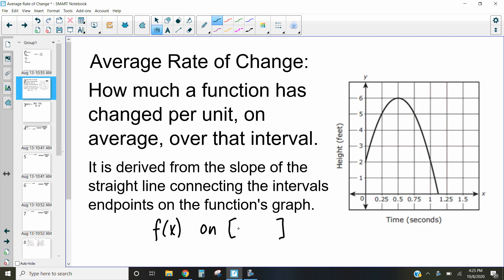So for example, if this one said on the interval from 0.25 to 1, what this means is from x being 0.25 here until x is 1, we want to look at what is the average rate of change for this gap. And that average rate of change is going to be the slope of the straight line connecting the interval's endpoints.